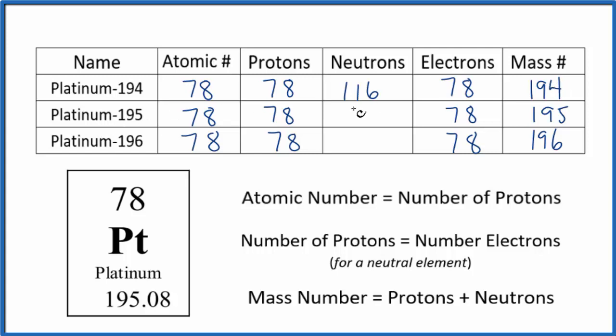For platinum-195, we'd have 117. And then for platinum-196, 78 plus 118, that gives us the mass number of 196.